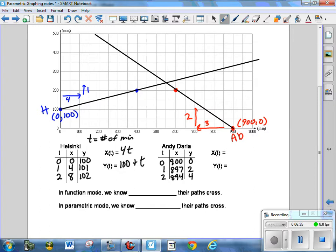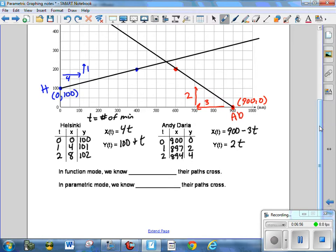If you would like to check what you got, X should be 900 minus 3T because every time we subtract 3 from 900 every minute. The other one should just be 2T. Y is 2T because you're just doubling whatever T is. Now in function mode, we know where their paths cross. In parametric mode where we have T, X, Y, we know when their paths cross.